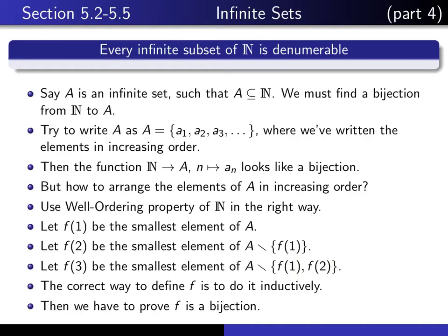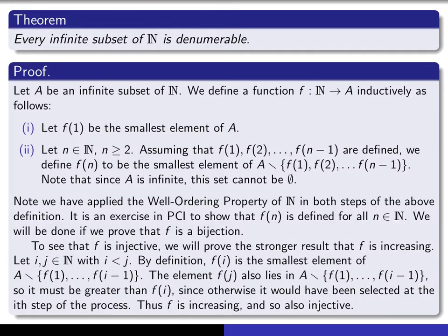So let's get started with the formal proof. We're going to prove that every infinite subset of the natural numbers is denumerable. We start with an infinite subset of ℕ and call it A. We're going to define f from the natural numbers into A inductively as follows. We define f(1) to be the smallest element of A. Now we give ourselves an n ≥ 2, and assume that f(1) up to f(n−1) are all already defined. Then we define f(n) to be the smallest element of the subset of A with all of those elements removed.